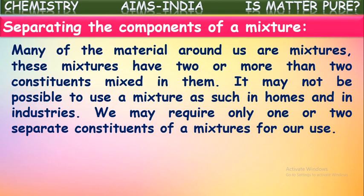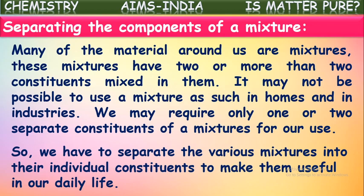Many of the materials around us are mixtures. These mixtures have two or more components mixed in them. It may not be possible to use a mixture as such in homes and industries — those materials directly may not be used. So the components should be separated. We may require only one or two separate components of a mixture for our use, so we have to separate mixtures into their individual components to make them useful in daily life.